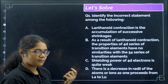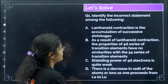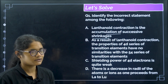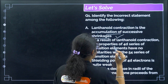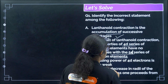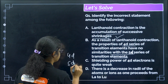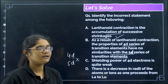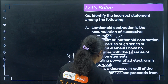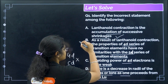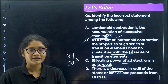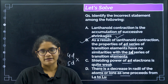Practice question — identify the incorrect statement: (A) Lanthanide contraction is the accumulation of successive shrinkages — this is correct. (B) As a result of contraction, properties of 4D and 5D transition elements have no similarities — this is incorrect because due to lanthanide contraction their sizes become almost the same, so there are similarities. (C) Shielding power of 4F electrons is quite weak — correct. (D) Radius decreases from lanthanum to lutetium — correct. Answer: option B.